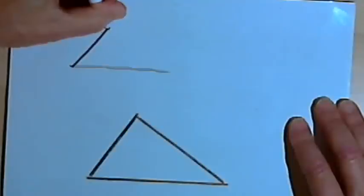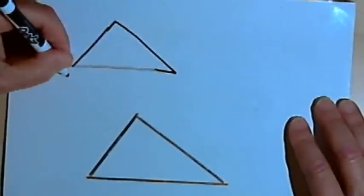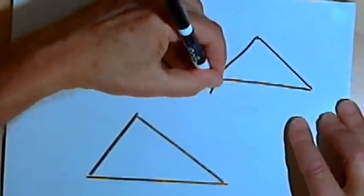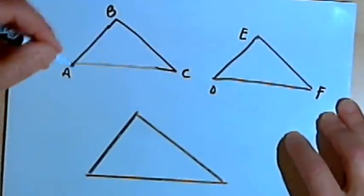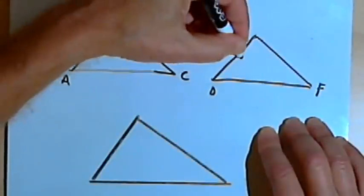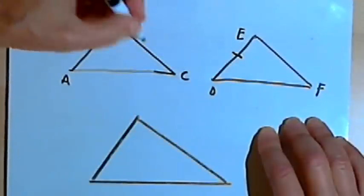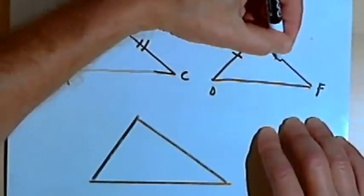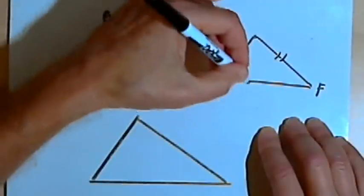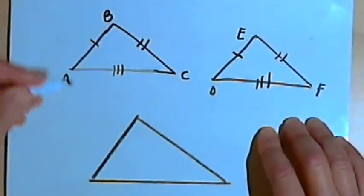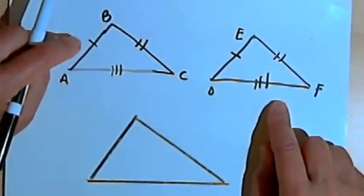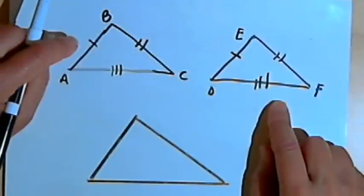What that says is this: if I've got two triangles, let's call one triangle ABC and the other DEF. If side AB is exactly the same length as side DE, so they're congruent sides, and side BC is congruent to EF, and side AC is congruent to side DF, then if we've got three pairs of congruent sides, those two triangles are going to be congruent. This is called side-side-side congruency.